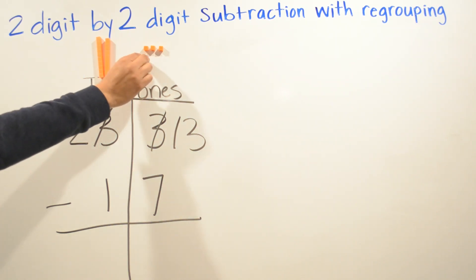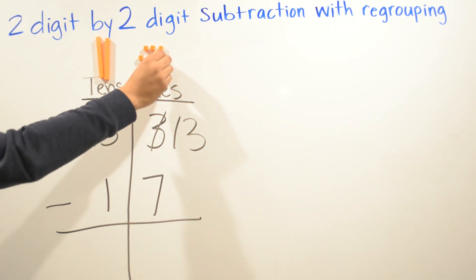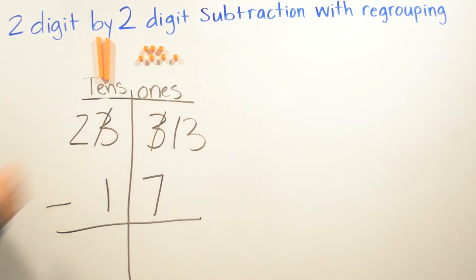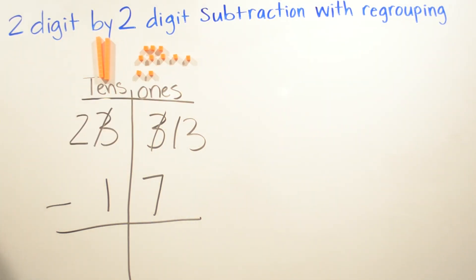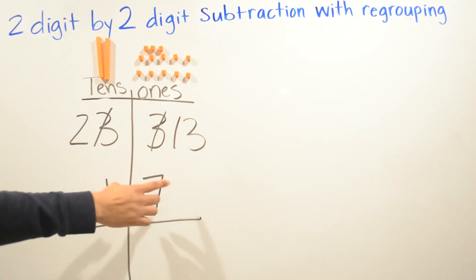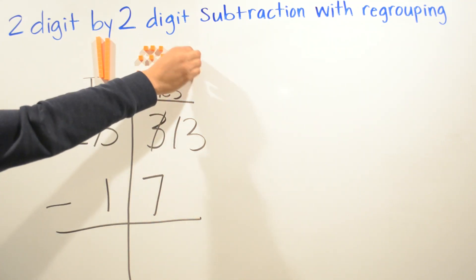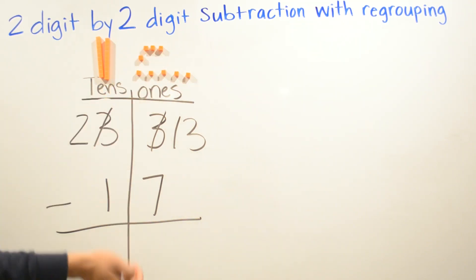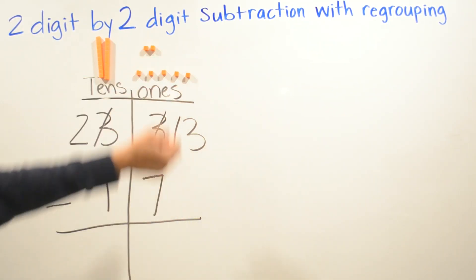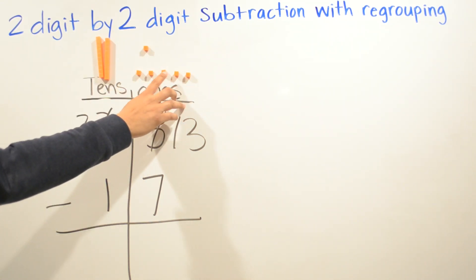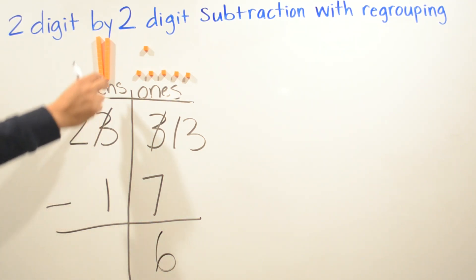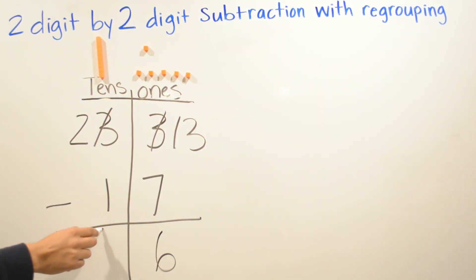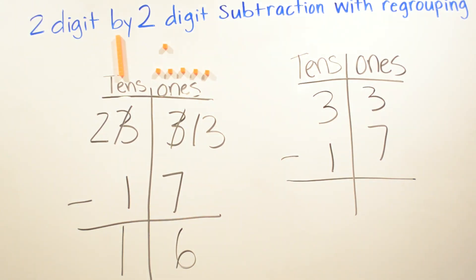We borrow and put ten on the ones space: one, two, three, four, five, six, seven, eight, nine, and ten. Now we subtract 13 minus 7: one, two, three, four, five, six left. And now two minus one — we take away one — gives us one. So our answer is 16.